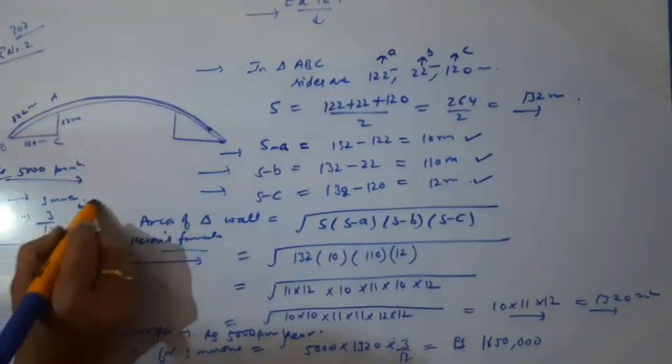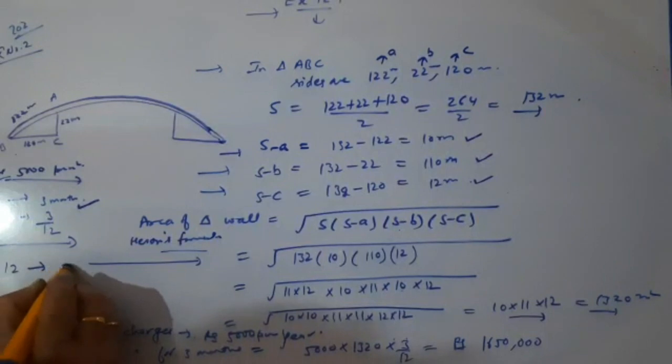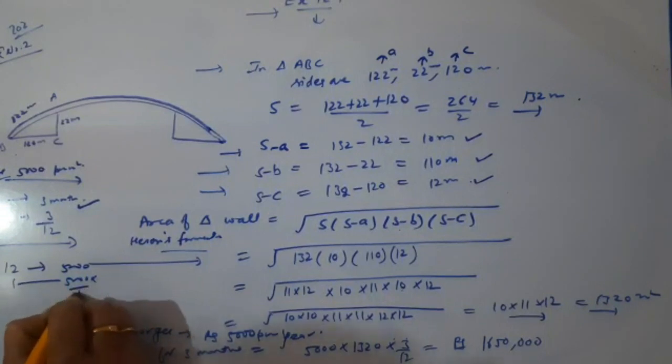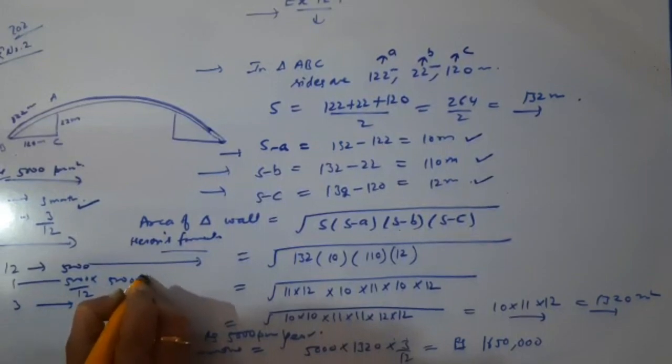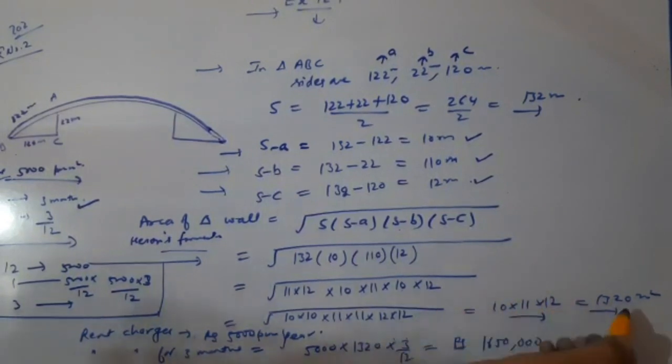This is our area: 1320. So total cost I will get is 1,650,000 rupees.